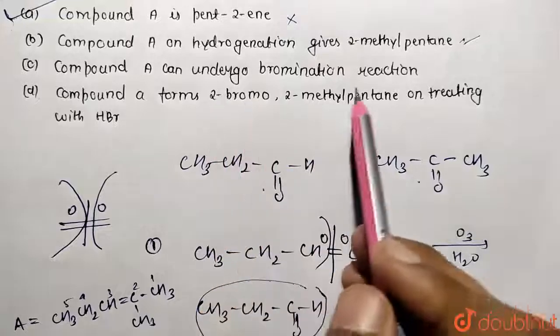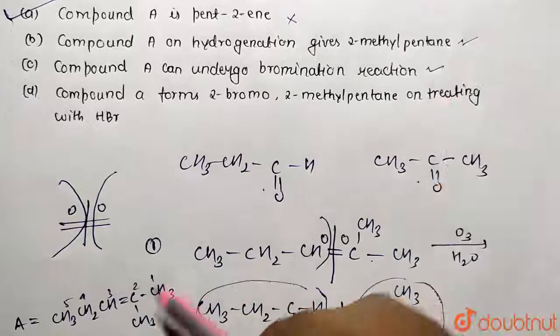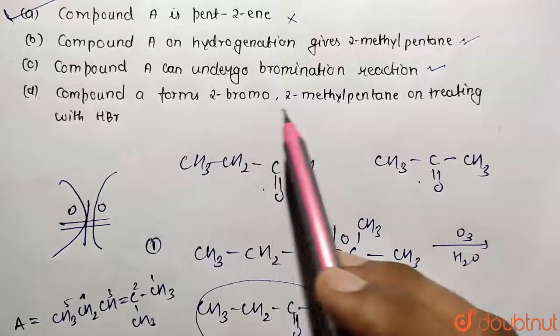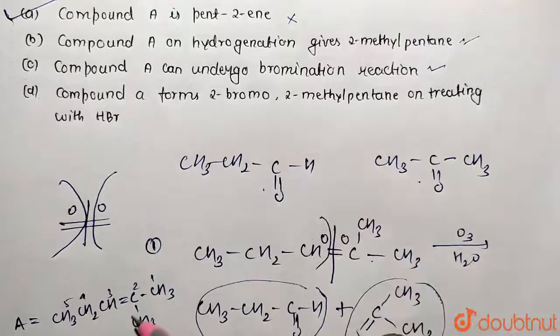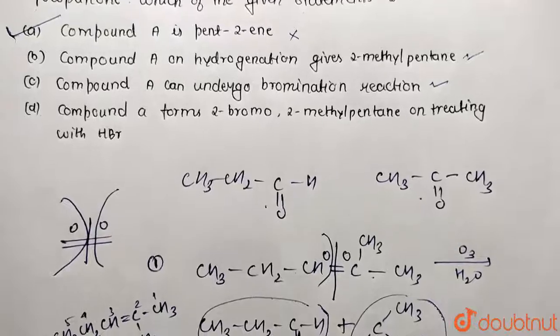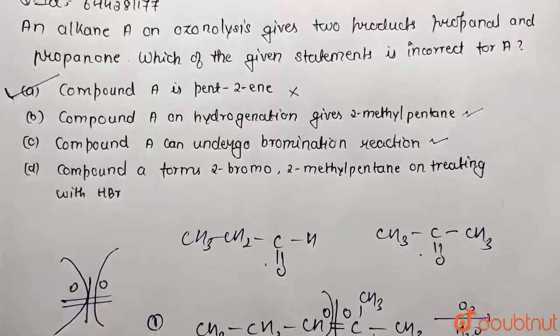Compound A undergoes bromination, so this is also true. Bromination reaction can be performed on this. Compound forms 2-bromo-2-methyl pentane on treating with HBr. That is also true when HBr is going to be added. This form will be obtained.